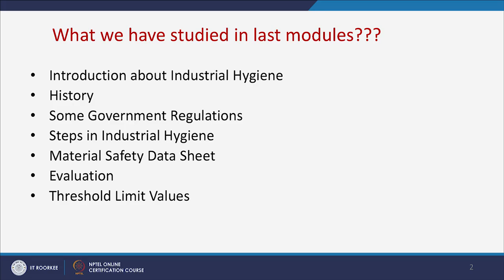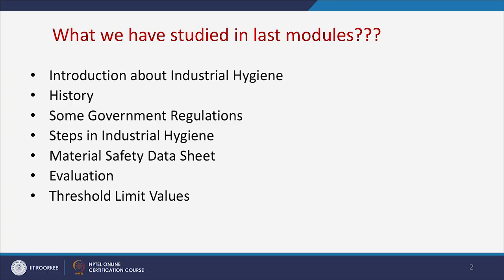In the last modules, we went through what industrial hygiene is, its history, governmental regulations and abbreviations, and the steps involved in industrial hygiene. We covered the material safety data sheet, performed evaluation studies to analyze the gravity of toxic substances released at the workplace, and discussed threshold limit values and other parameters to assess those toxic releases.